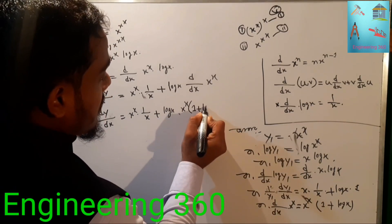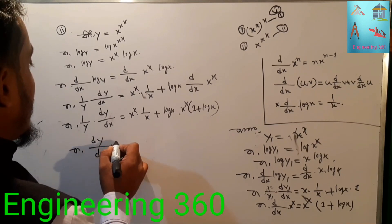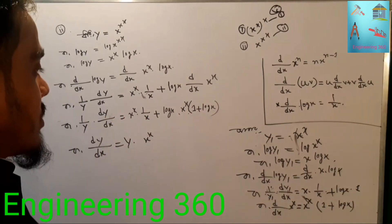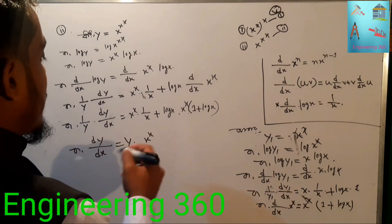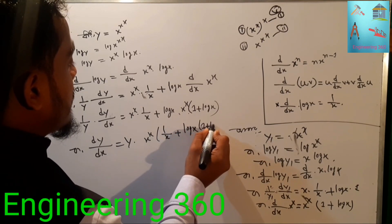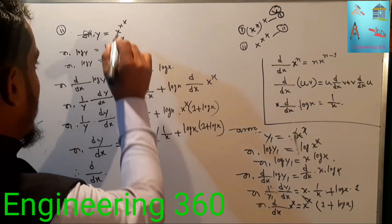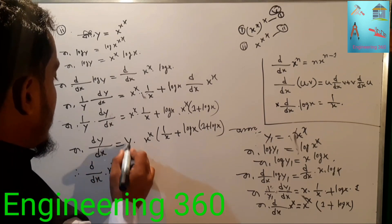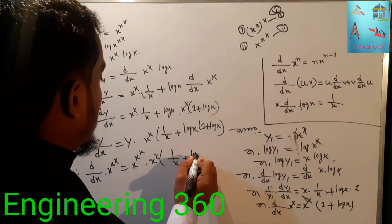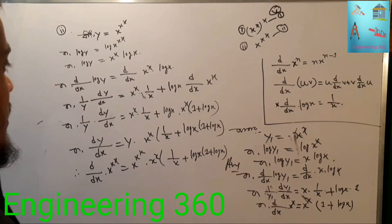Therefore dy/dx equals y times x to the power x times (1 by x plus log x) times (1 plus log x). Since y equals x to the power x to the power x, the final answer is: dy/dx equals x to the power x to the power x times x to the power x times (1 by x plus log x)(1 plus log x).